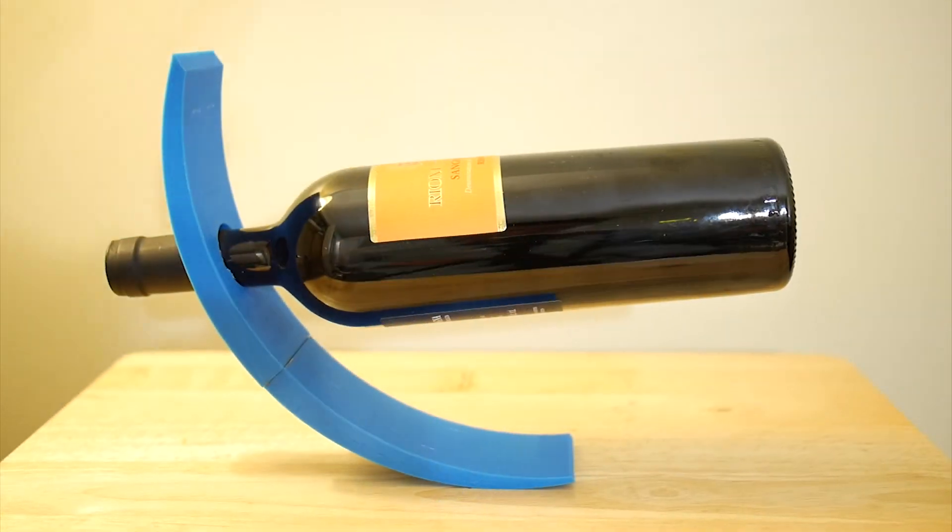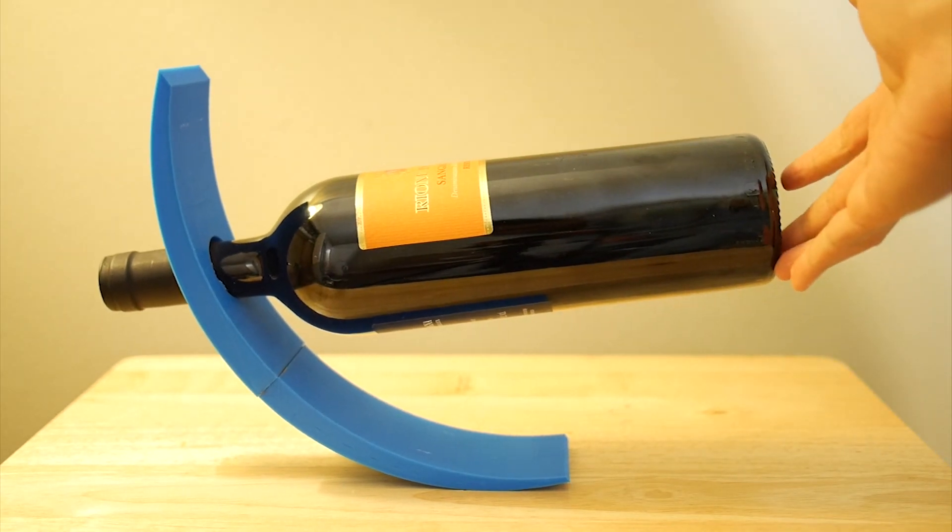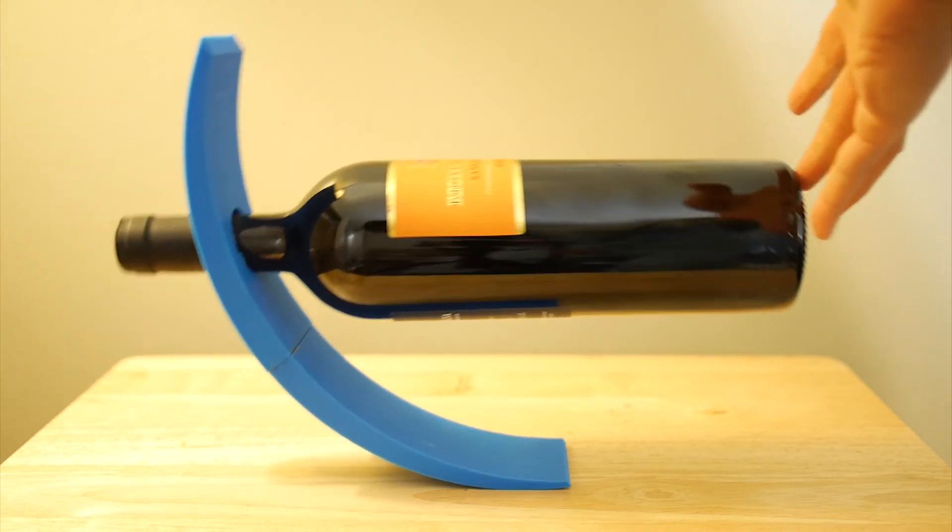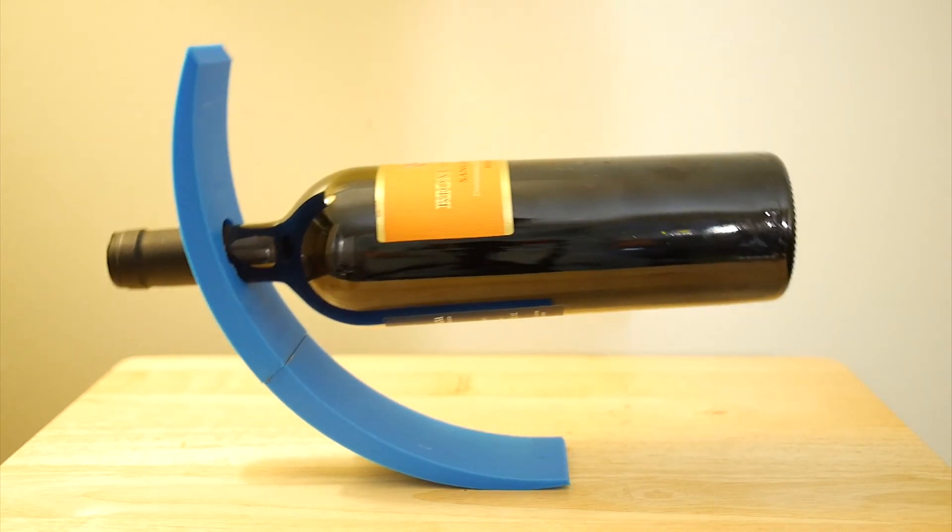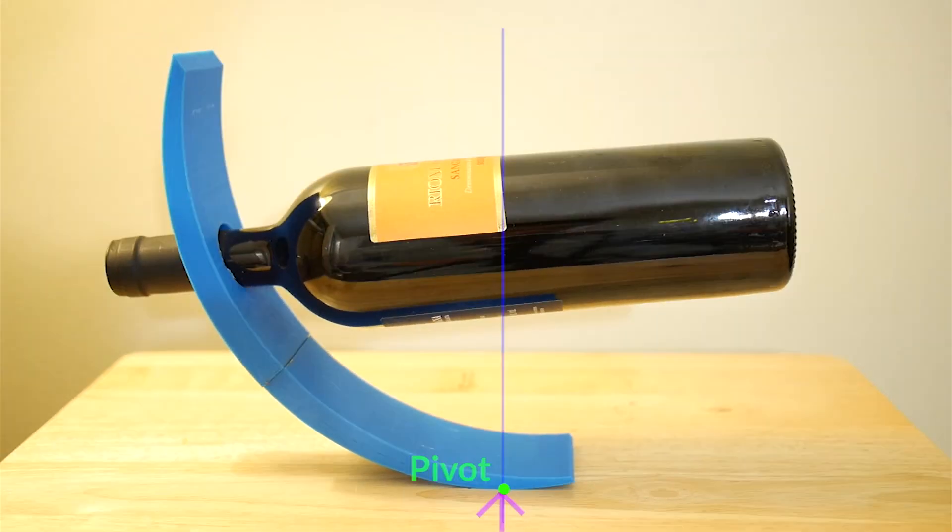This is another cool example of self-balancing. It's a wine holder. Let's look at how this can balance by itself. First, the pivot point of this wine holder is here, and the center of mass is here. The gravity at the center of mass and the reaction force at the pivot point are perfectly aligned each other, which means there is no torque to make this rotate.